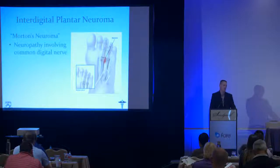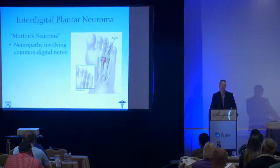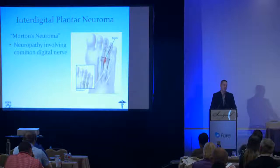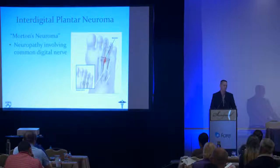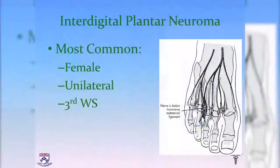Moving more centrally and laterally in the forefoot: Morton's neuroma, also called interdigital neuroma, involves the common digital nerve running beneath the transverse metatarsal ligament between the metatarsals, giving branches to the respective digits. It occurs most commonly in females, unilaterally, in the third web space.